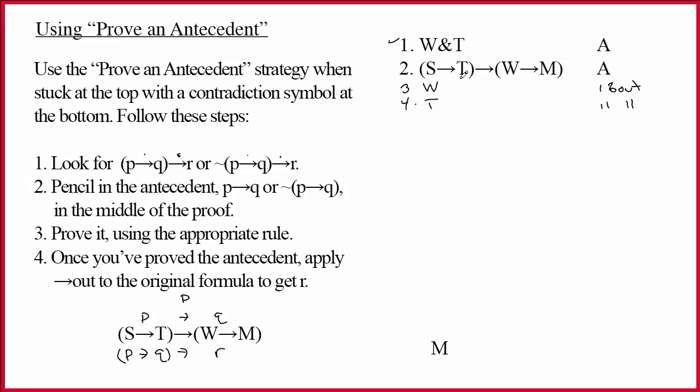But if I think about what is necessary to build S arrow T, I say, I have to prove S arrow T. And it turns out that you can prove a conditional if you can prove that the consequent is true.